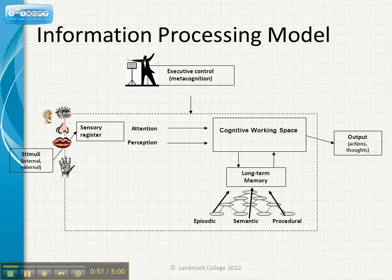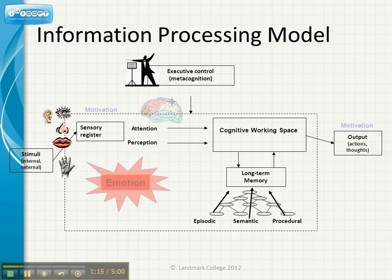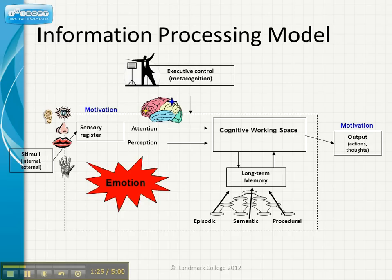We have to bear in mind that everything in here is controlled by our executive functions, and most critical of which is the connection between what our senses receive and what makes it into our cognitive working space, which is modulated by attention and perception. Those of course are influenced by motivation and emotion, and perceiving things correctly and attending to the right things is critical to bringing in the right pieces of information into our cognitive working space.